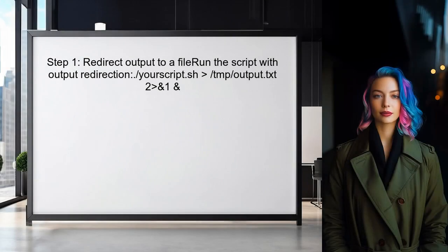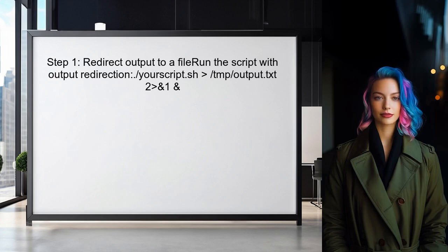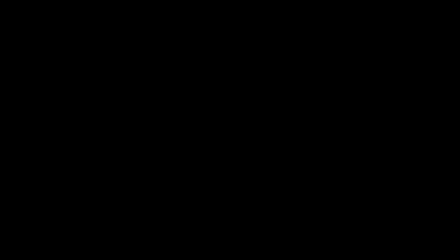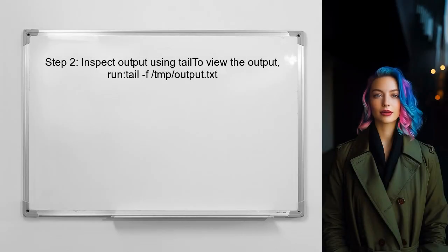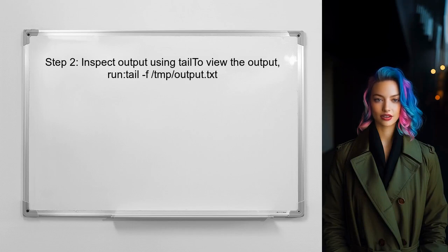To run a shell script in the background while keeping the ability to inspect its output, first redirect the output of the script to a temporary file. This can be done by using the greater-than symbol followed by the file path. You can then check the output of the script at any time by using the tail command, which allows you to view the last few lines of the output file.